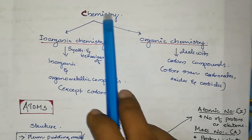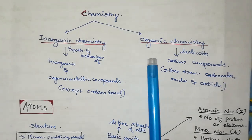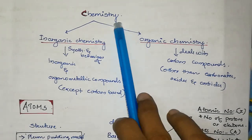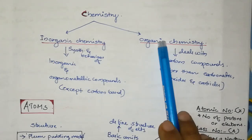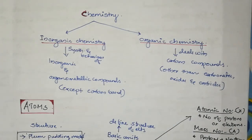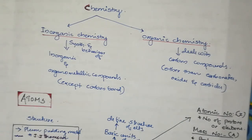Chemistry is a branch that can be divided into Inorganic chemistry and Organic chemistry. What is chemistry? It is a branch of science that deals with the substances of which the matter is composed.